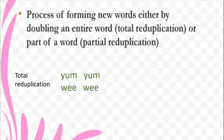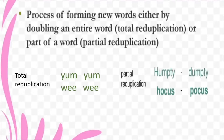Another example of total reduplication is 'VV' meaning 'small small'. Now let us look at partial reduplication: 'Humpty Dumpty' — we picked up the word 'humpty', wrote it again as 'dumpty' but changed the H to D. So it is the same word written twice with a slight change — partial reduplication. Similarly 'hocus pocus': H-O-C-U-S becomes P-O-C-U-S, replacing the H. These are examples of reduplication.